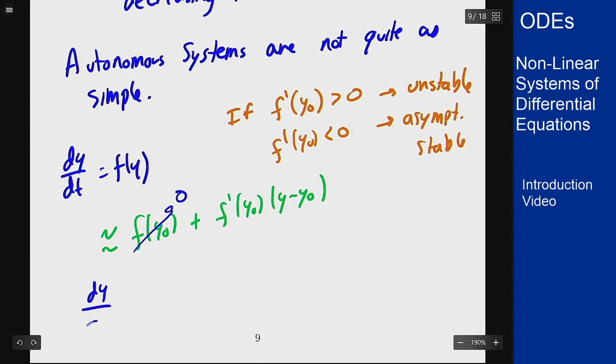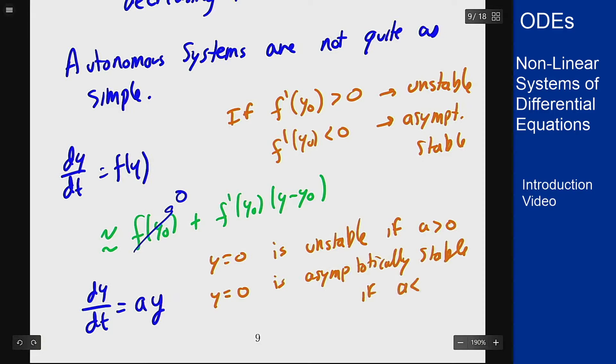For dy/dt = a·y, we know that zero is unstable if a is positive and asymptotically stable if a is negative, because the solution is c·e^(at) which goes away if a is positive or comes in if a is negative. We didn't talk about equations this way because we didn't need to, but this is the way we're going to have to visualize systems to do the same process.